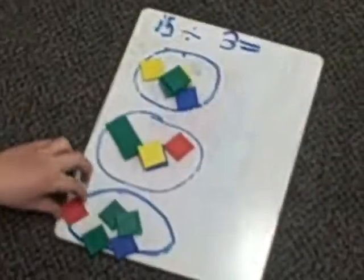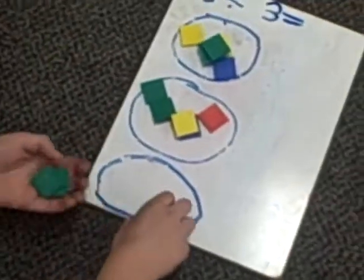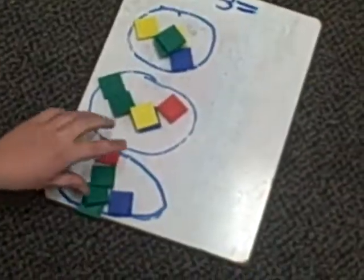Then you can count the tiles in one group. 1, 2, 3, 4, 5. So it equals 5.